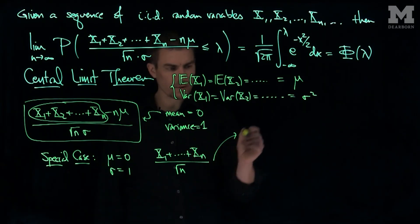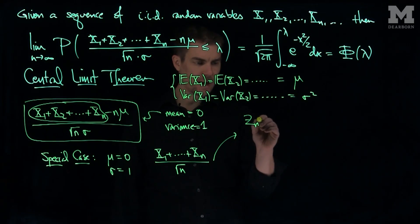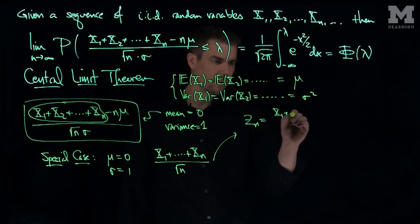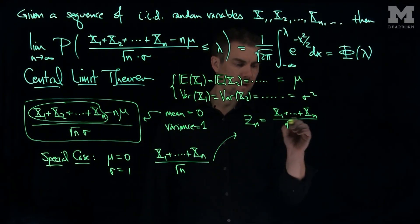Well let's think about it like this. If we take this random variable and call this random variable zn, which is going to be x1 plus xn over the square root of n.